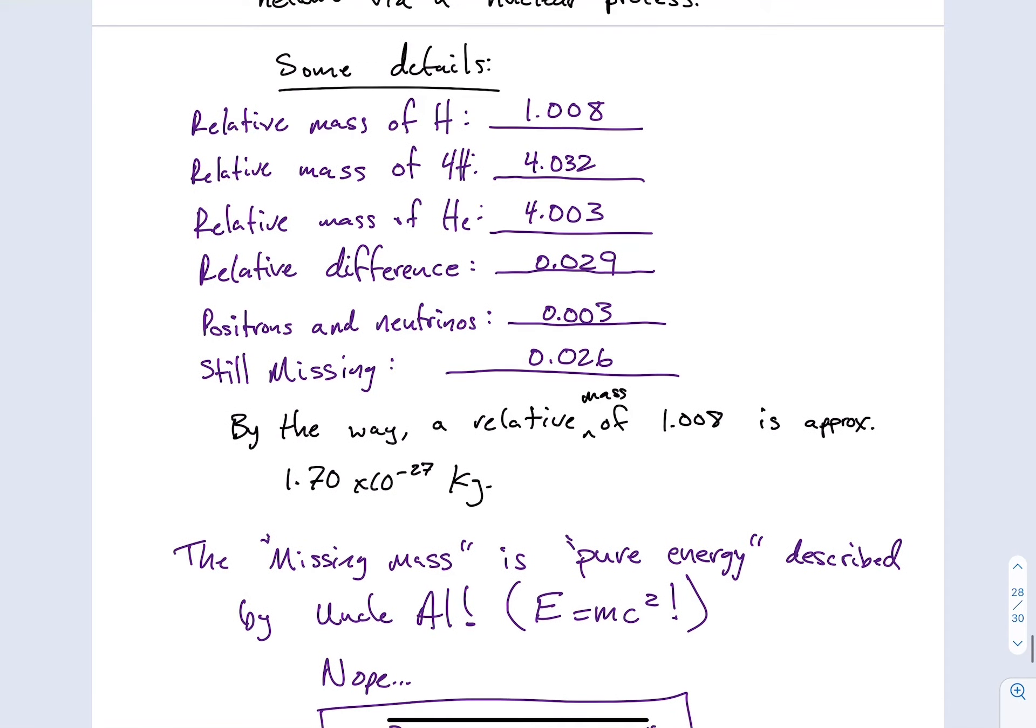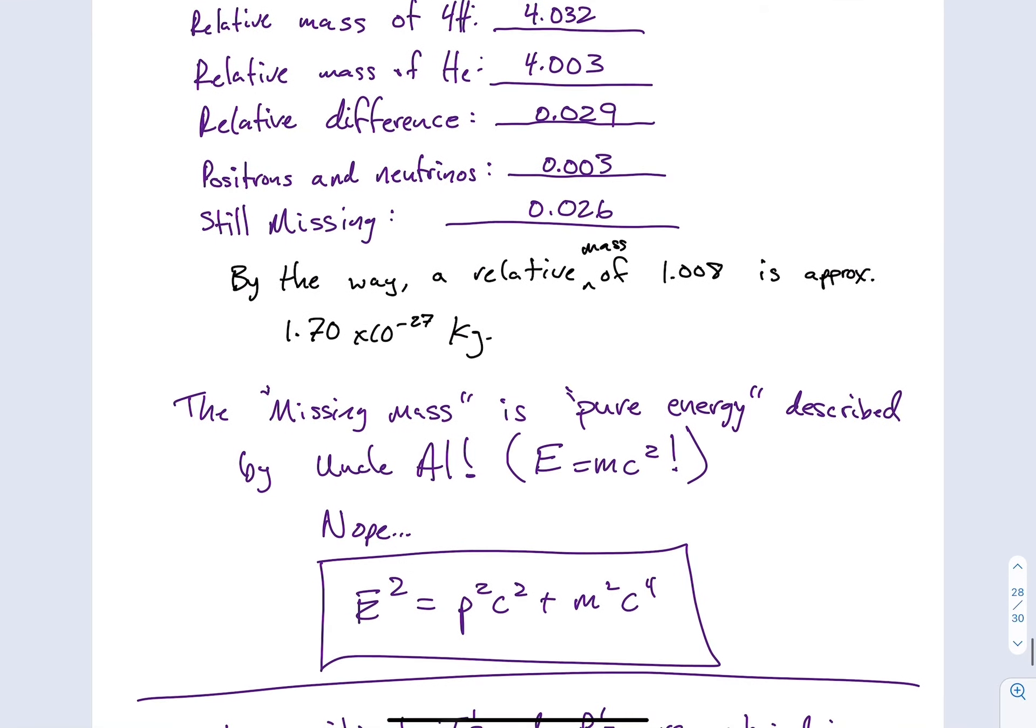The missing mass, of course, is turned into pure energy through these nuclear processes. And it's described by Uncle Al, E equals MC squared. But then I decided to say, no, that's not actually true. The equation he came out with, which is relativistic energy, is written E squared equals its momentum squared times the speed of light squared plus M squared C to the fourth. And if, of course, something isn't moving, this equation simplifies into the famous E equals MC squared.